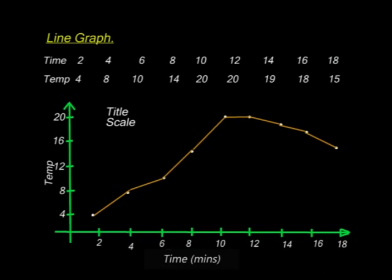It is important to know which variable to place on which axis. Conventionally, the independent variable is plotted on the x-axis and the dependent variable on the y-axis. Temperature changes with time, so temperature is dependent on time. Time is independent — it does not depend on any other factor.